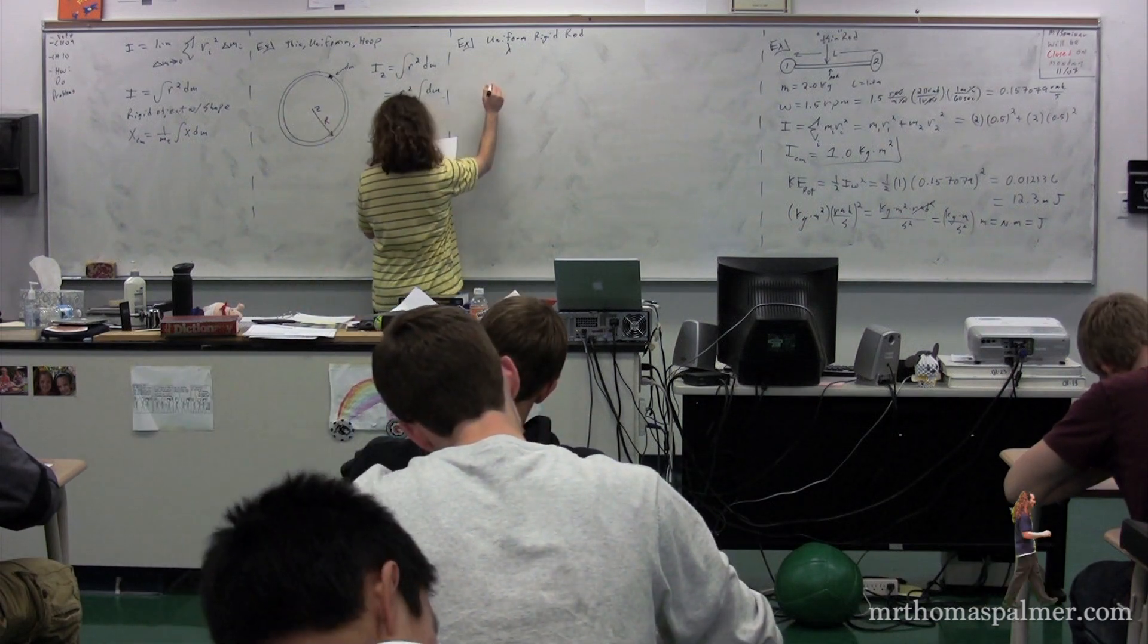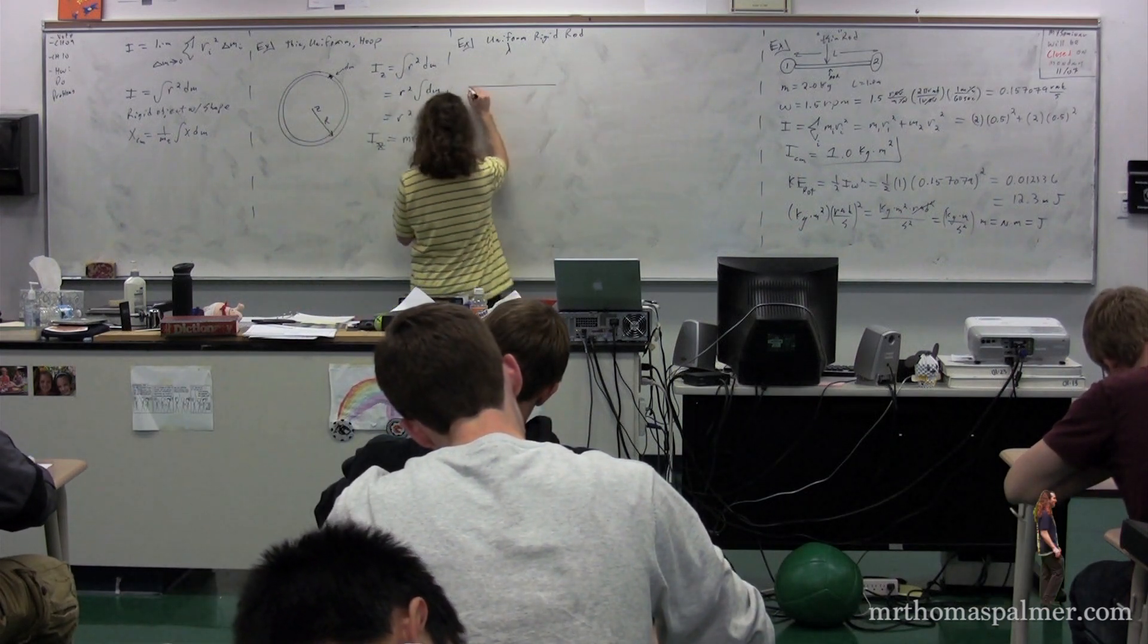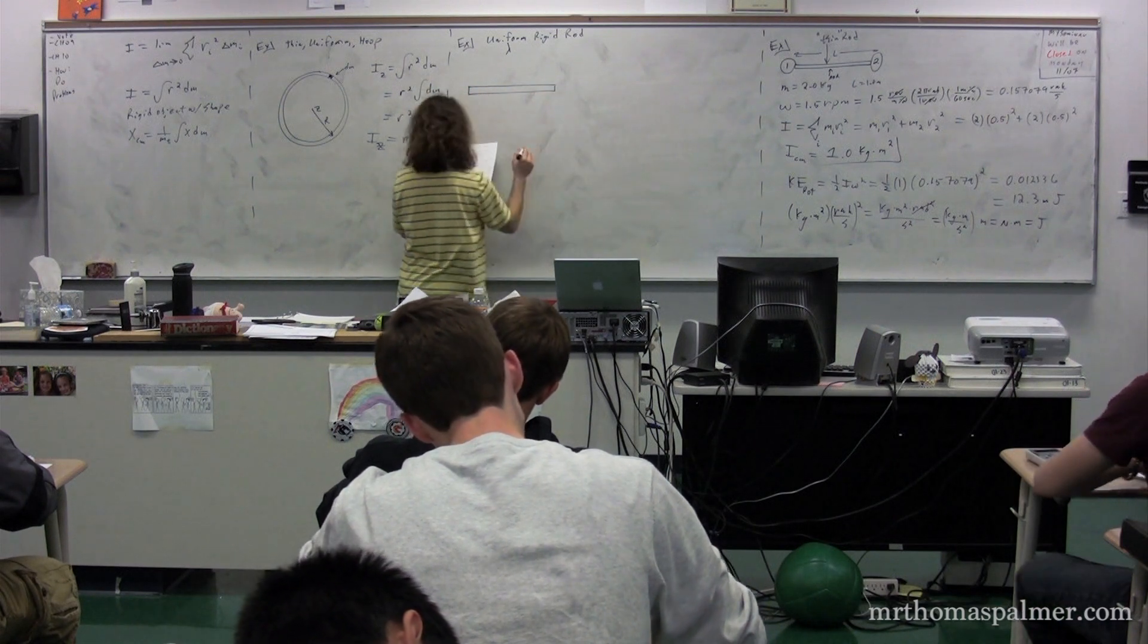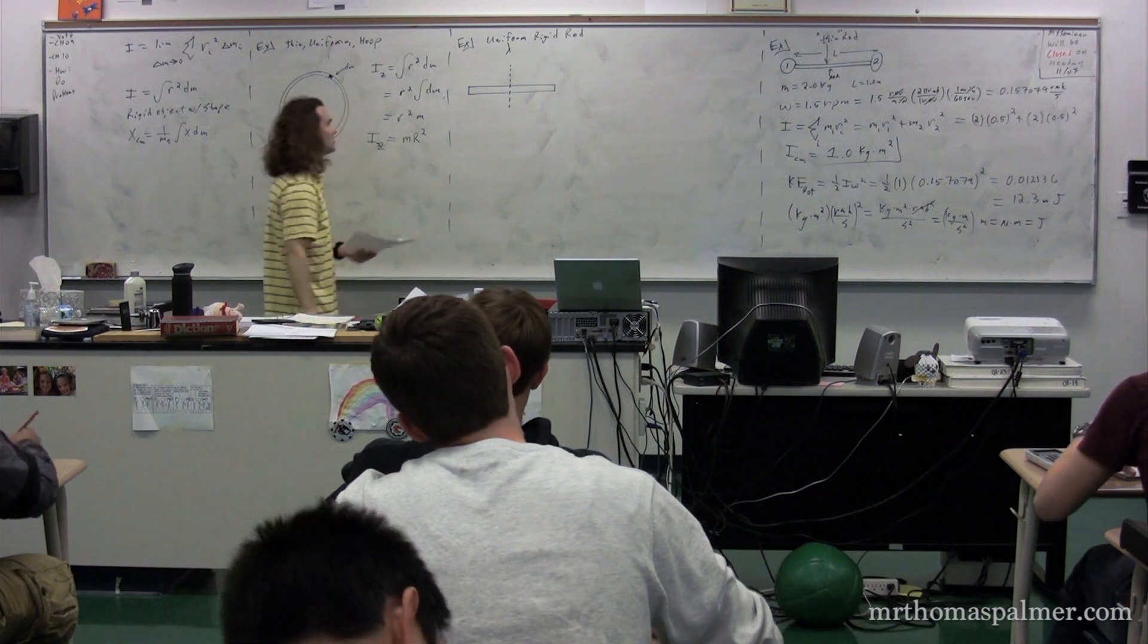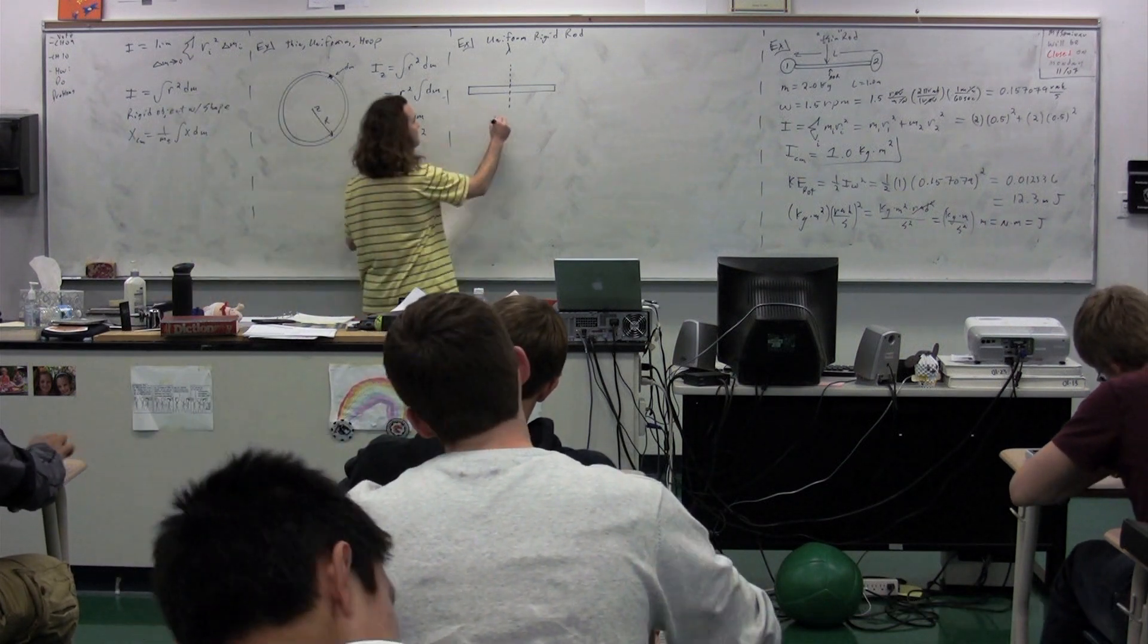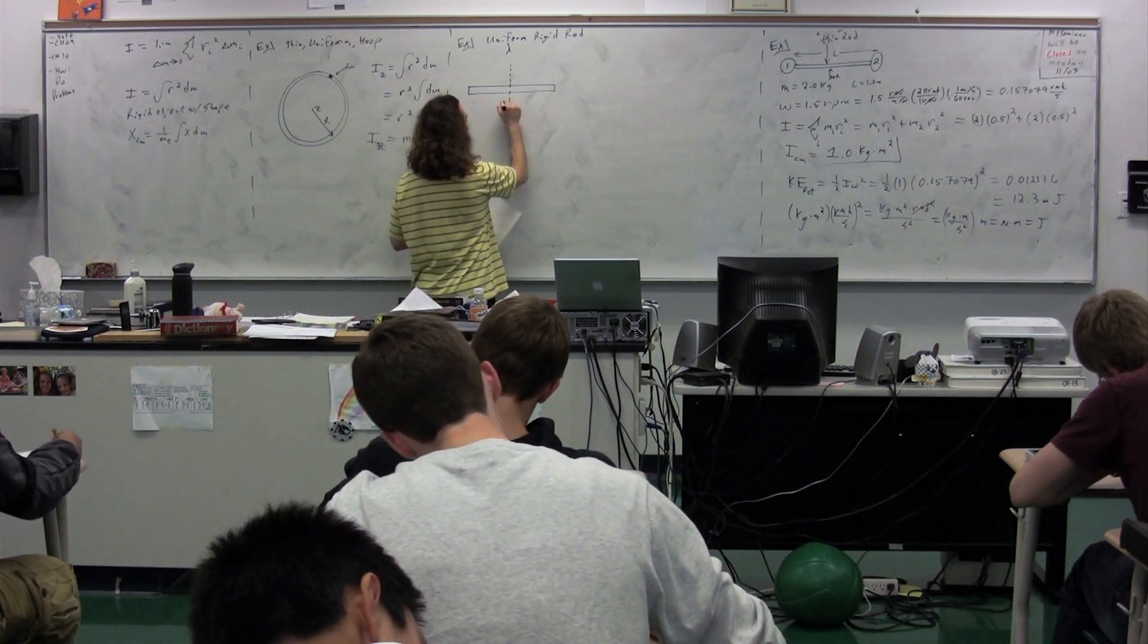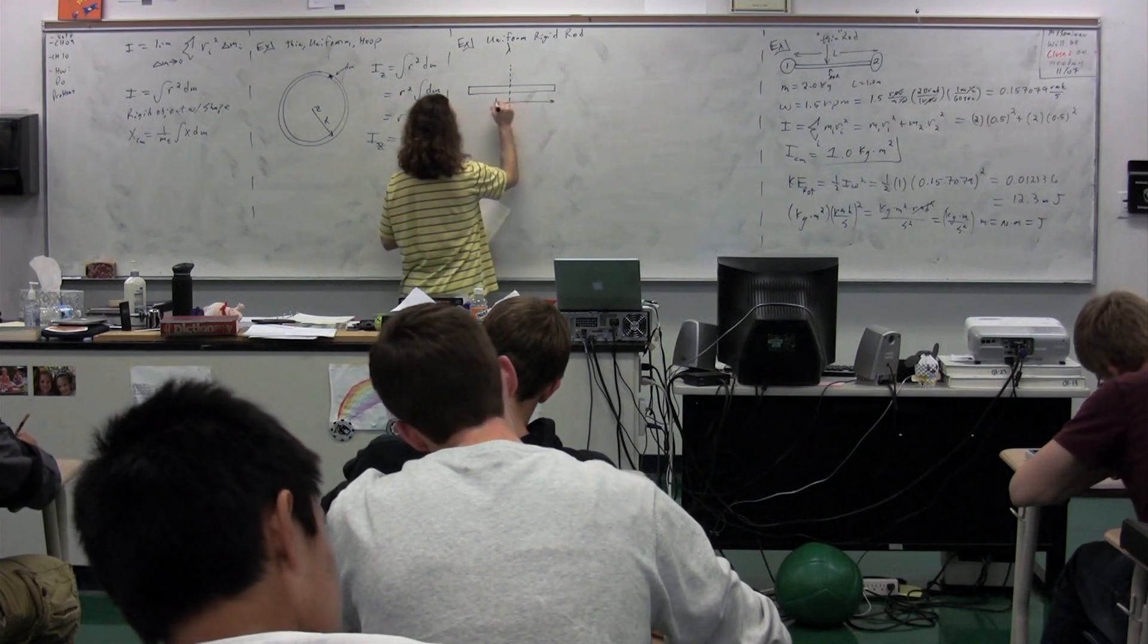So we have our uniform rigid rod, which looks like this. And we are going to spin that uniform rigid rod about the center of mass of it, which is going to be right in the middle. So this is going to be our axis of rotation. This rod is going to have a length L.